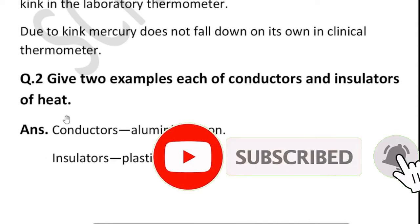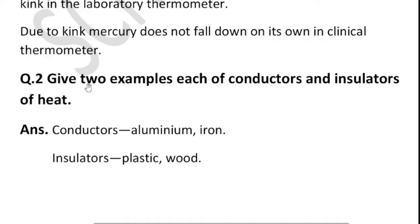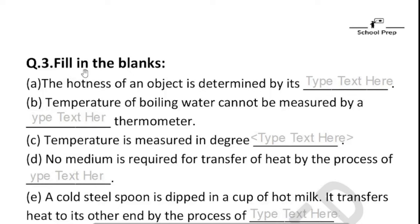The next question is: give two examples each of conductors and insulators of heat. A conductor is a material in which heat easily flows. An insulator is a poor conductor in which heat does not easily flow. Examples of conductors are aluminium and iron. Examples of insulators are plastic and wood.